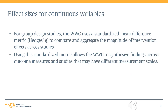The WWC calculates effect sizes in different ways based on the types of variables the study used to measure outcomes. For continuous measures, or variables that have many possible values, such as standardized achievement test scores, the WWC calculates a standardized mean difference effect size. The standardized mean difference effect size, or Hedges G, represents the impact of the intervention in standard deviation units.